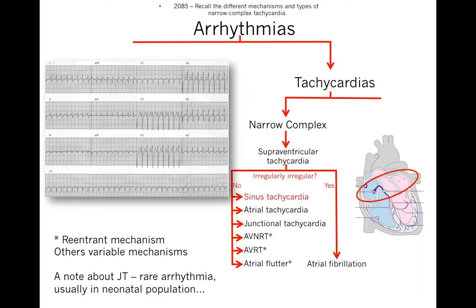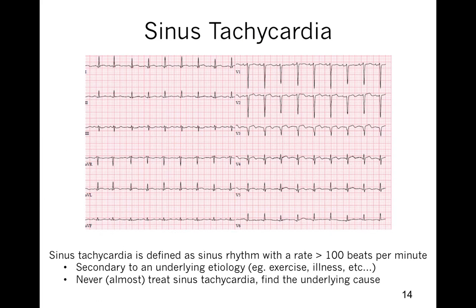Sinus tachycardia: the P-wave has a normal axis — positive in leads 1 and 2 — so it's coming from the sinus node. Sinus tachycardia is a sinus rhythm with a rate of more than 100 beats per minute, and could be a very normal physiologic process. For example, if somebody is running on a treadmill, the sympathetic nervous system signals the sinus node to increase heart rate up to 120, 130, or 140, but the P-wave is still coming from the sinus node.